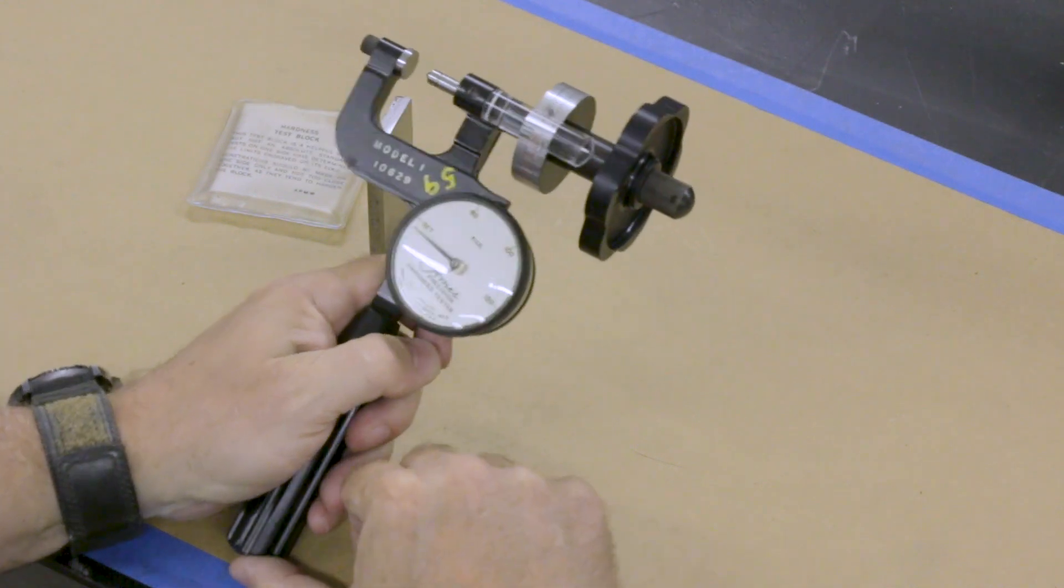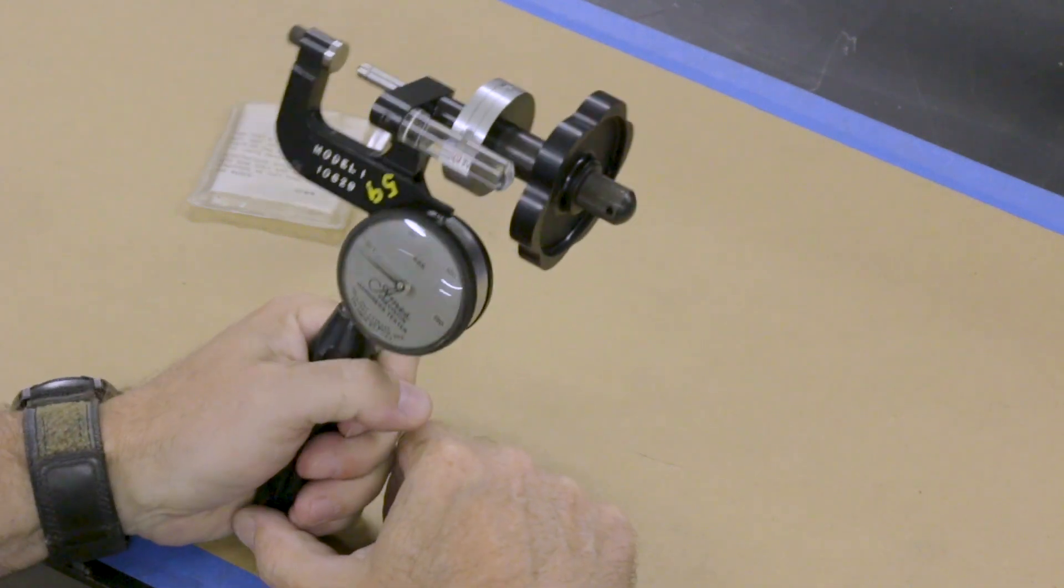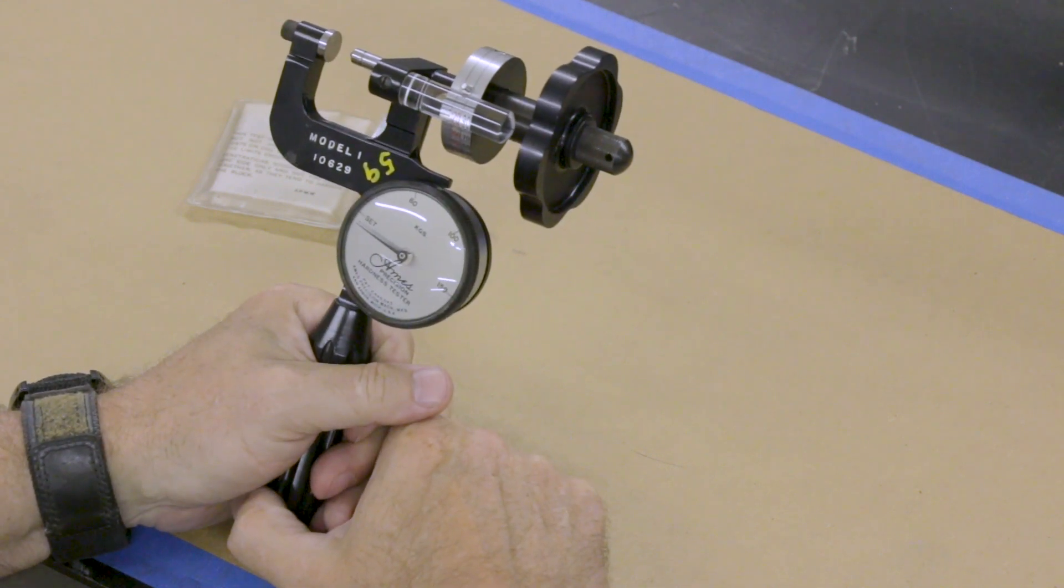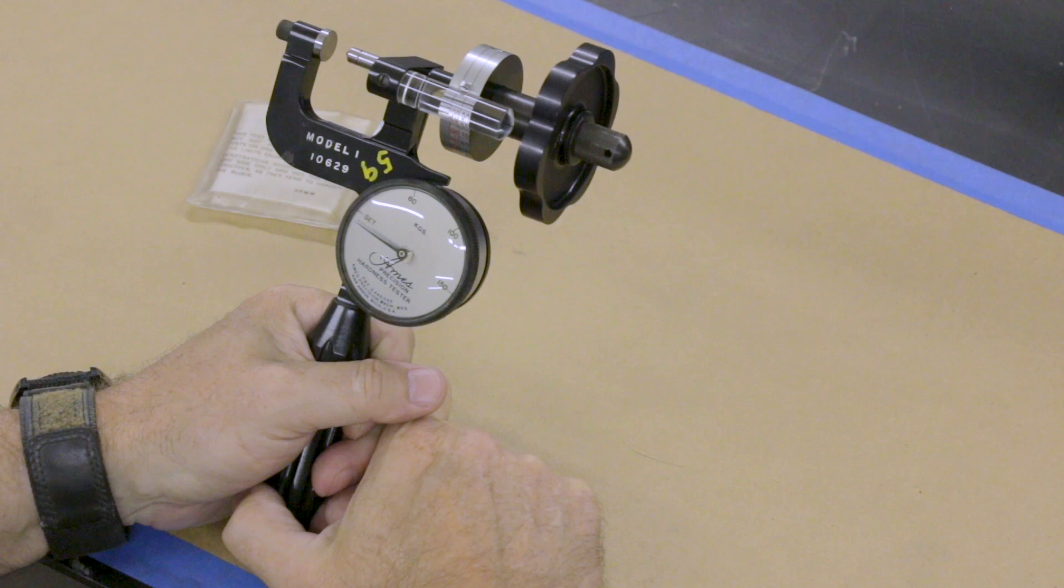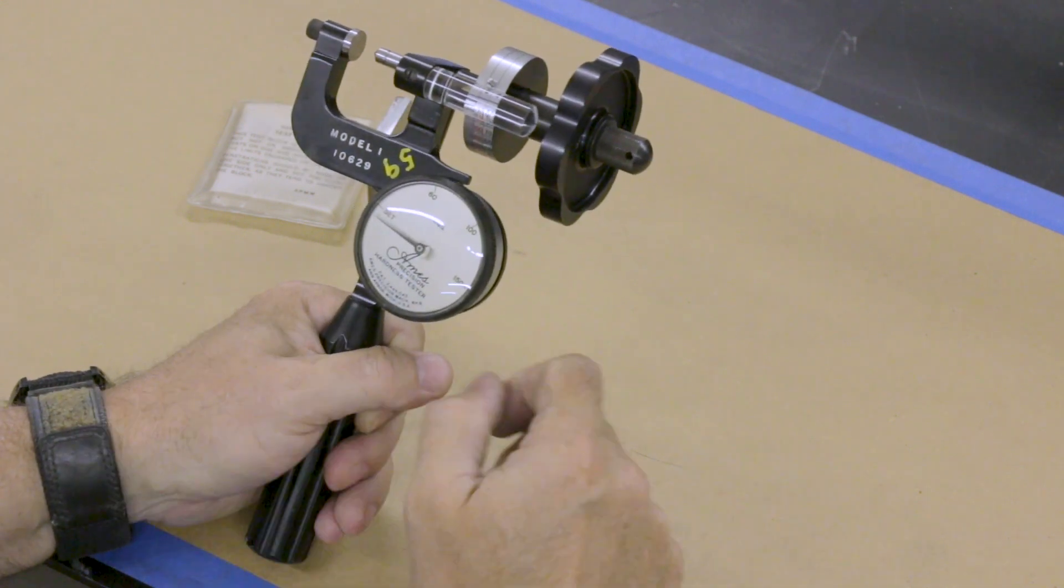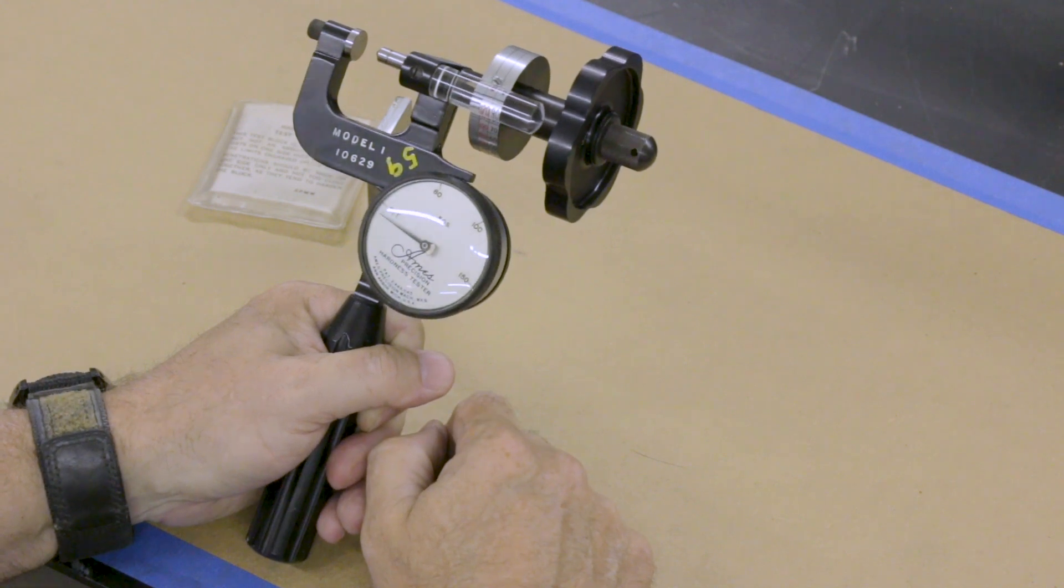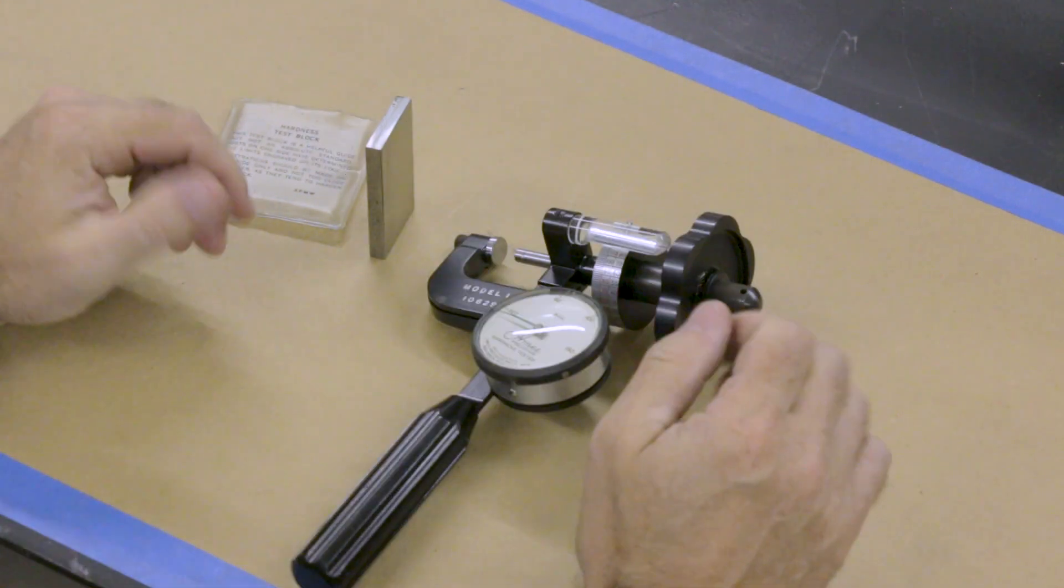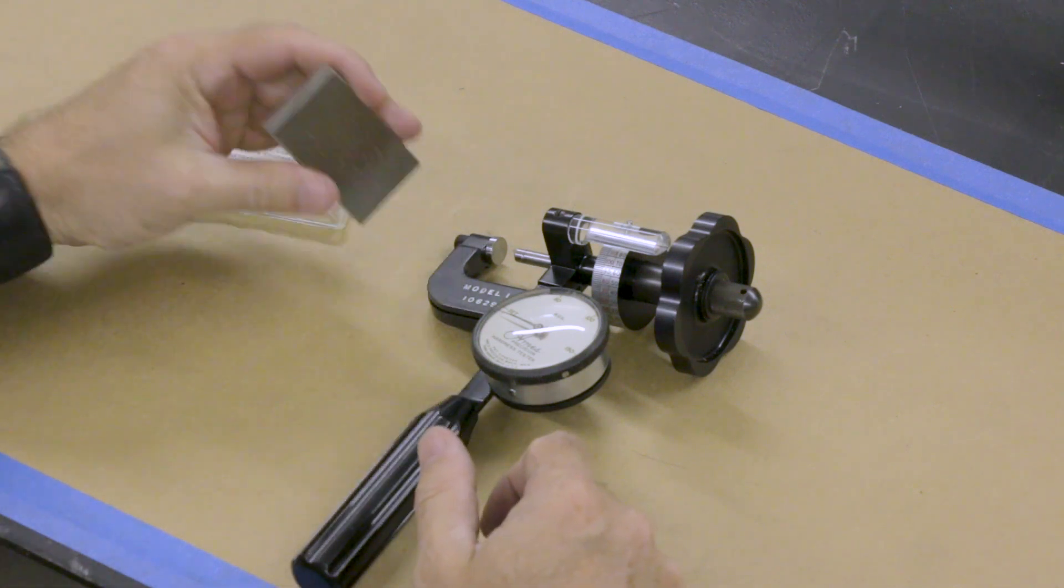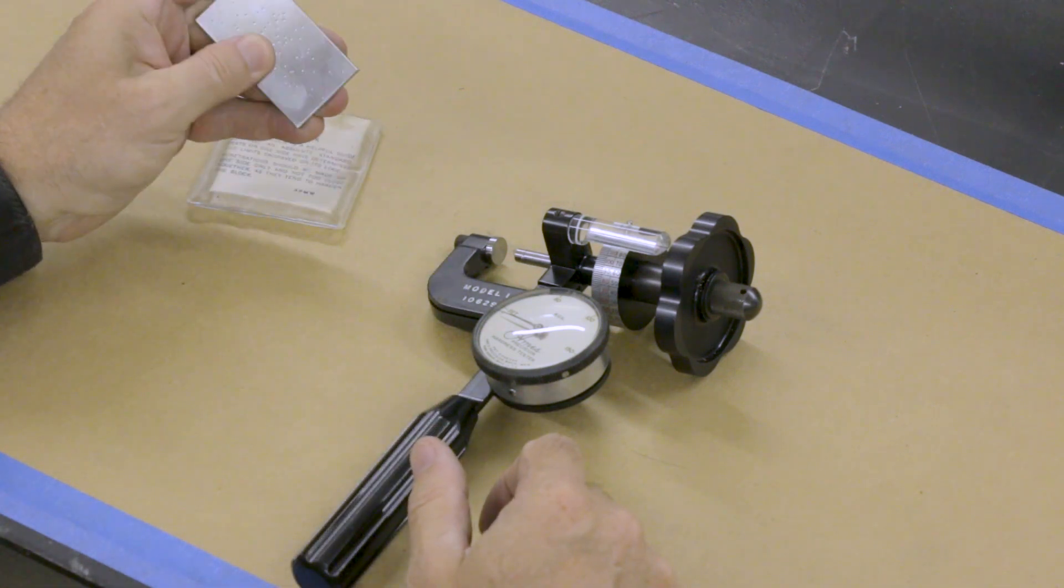And I probably could send it for calibration. But because it's always been consistently off by two, I just add those two to my knife blades. And it's off by two, not only on this 64 block, but on the other lower hardness block also. So then once I've taken the reading on my test block, then I'm ready to take a reading on my knife.